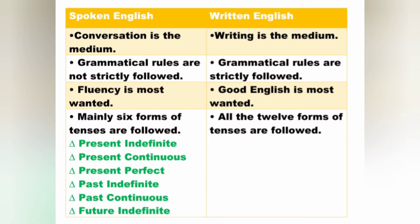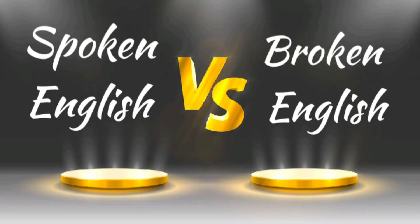The third difference is that in spoken English fluency is most important, but in written English good grammar is most important. The last difference is about tenses. In spoken English, mainly six forms of tenses are used: present indefinite, present continuous, present perfect, past indefinite, past continuous, and future indefinite. But in written English, all 12 forms of tenses are followed. That covers the differences between spoken and written English.